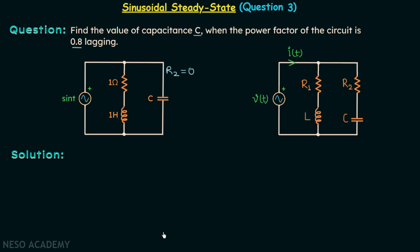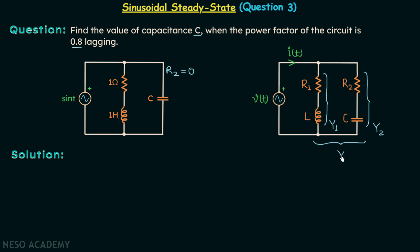Let us say that this branch with resistor R1 connected in series with inductor L is offering admittance Y1. This branch with resistor R2 connected in series with capacitor C is offering admittance Y2, and together the two branches are offering admittance Y. As the two branches are in parallel, Y is equal to Y1 plus Y2. Let's call this equation number 1.